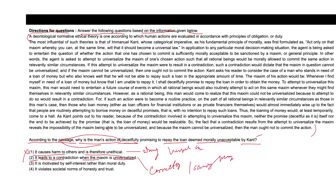The third choice said it is motivated by self-interest rather than moral duty. While Kant's theory does emphasize acting out of duty rather than self-interest, the core issue is the logical contradiction, not just the motivation. Furthermore, option four points to societal norms as the reason for unacceptability, but Kant's judgment is not because of social norms — it is based on the logical consistency of universalizing the action's maxim.